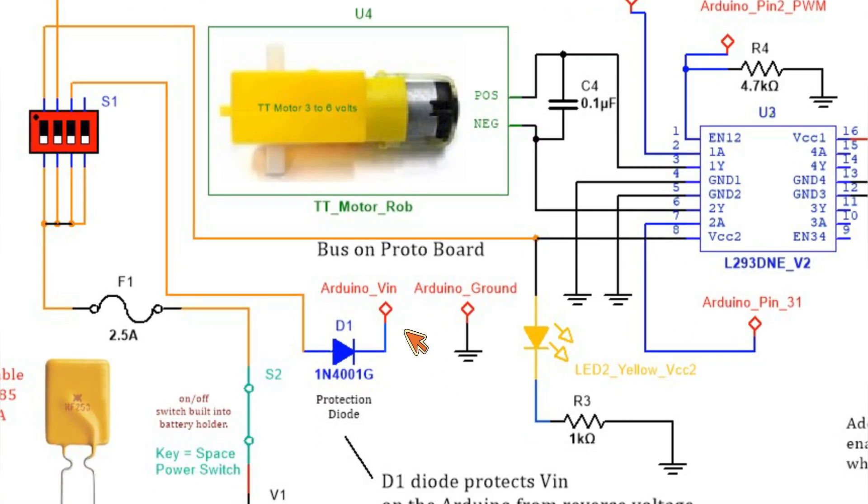The Arduino also needs to be grounded using the same ground as the circuit on the prototyping board. And then there are two LEDs. One yellow LED is telling you have power to the 7.4 volts going to VCC2.